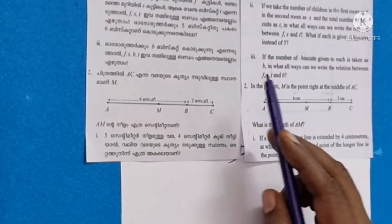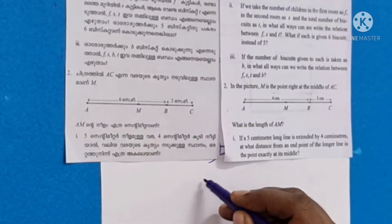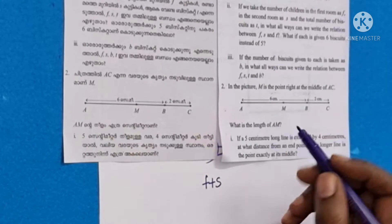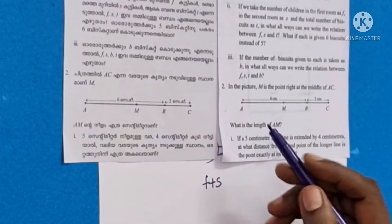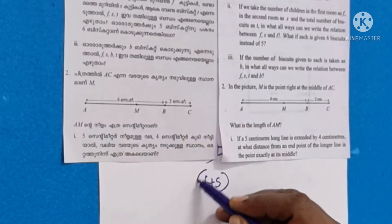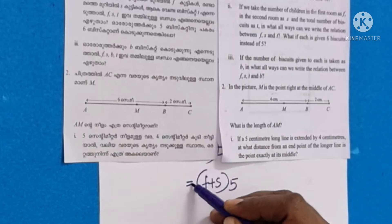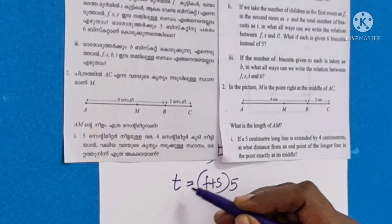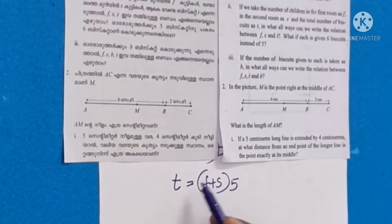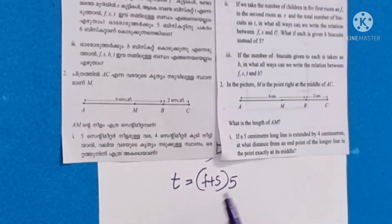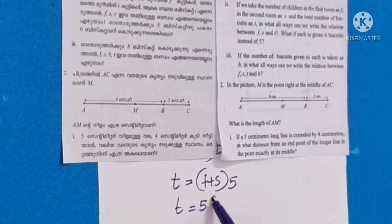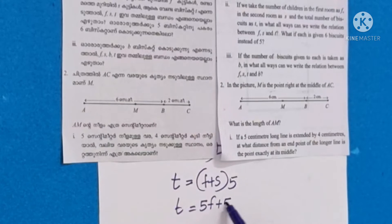If we take the number of children in the first room as F and the second room as S, then the total biscuits T equals F plus S. So T is equal to 5 times (F plus S).